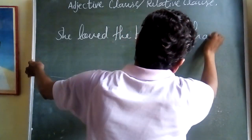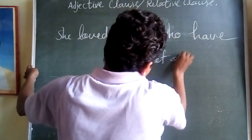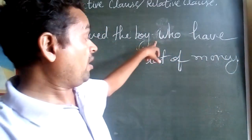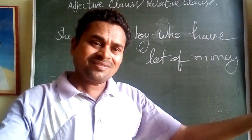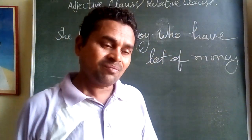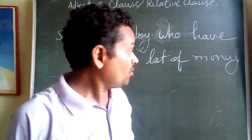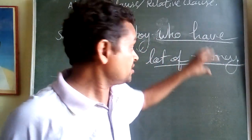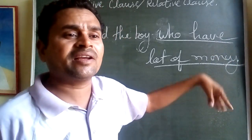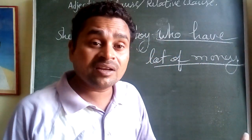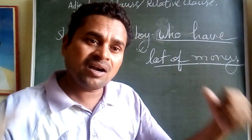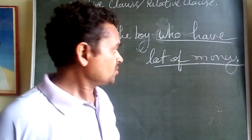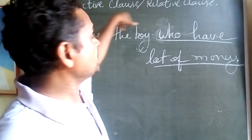Another example: 'She loves the boy who has a lot of money.' The boy is so rich — means this clause is explaining and describing about the boy. What kind of boy is that? The boy is so rich and powerful. So these kinds of sentences are called adjective clauses.